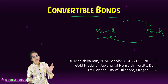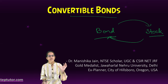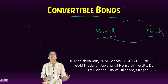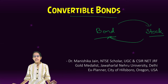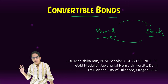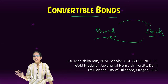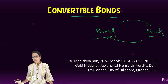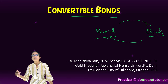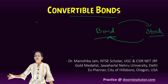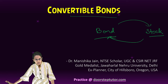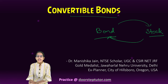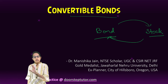A bond is for a fixed tenure with a fixed interest. However, stock does not have fixed interest and does not have a fixed tenure. You can sell the stock as soon as you feel the rate is rising or you feel that in the future the rate could decline. That is how a stock works.